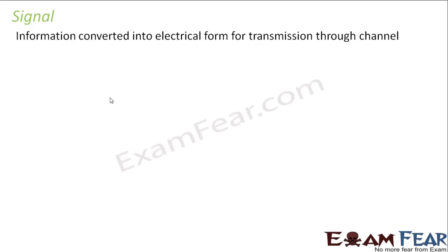Let us start with signal. In the past few slides I have often been talking about the message signal and electrical signals. So what is a signal? A signal is information converted into electrical form for transmission through a channel — it is information in a certain form which is capable of transmission through the channel.